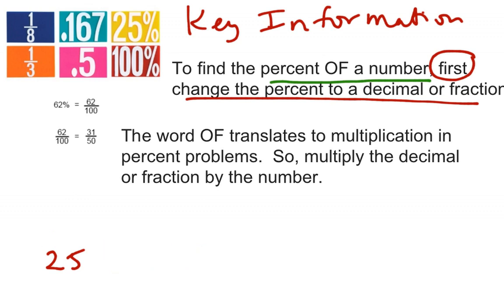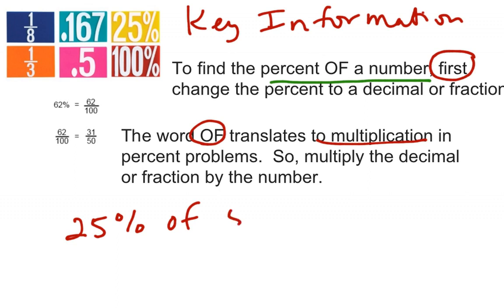Then, since the word of translates to multiplication in a percent problem, you multiply. So if you have 25% in my example of 50, that translates to 25% multiplied by 50. But you have to change that 25% to a decimal or fraction first.